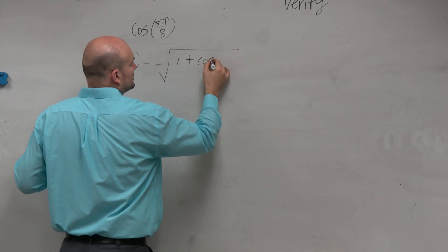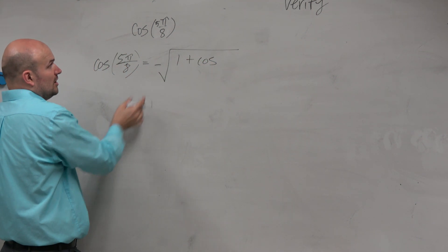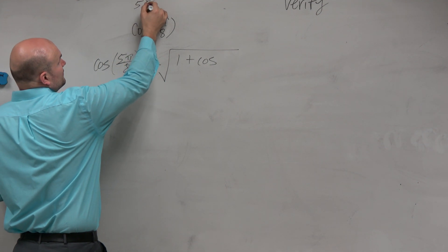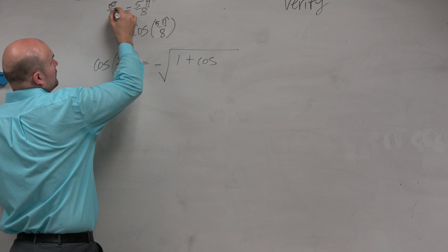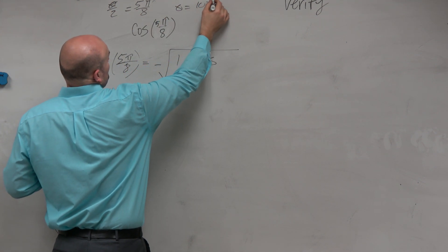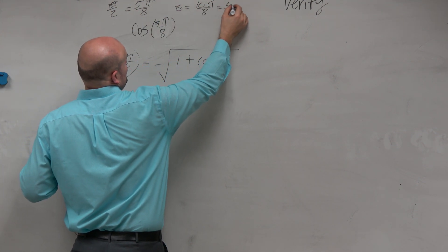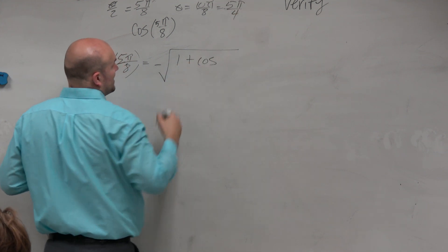And this would be 1 plus the cosine of theta. If 5π over 8 is equal to theta over 2, then theta equals 10π over 8, which is 5π over 4.